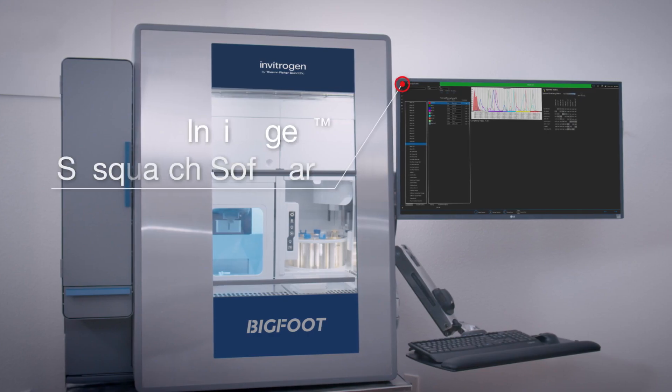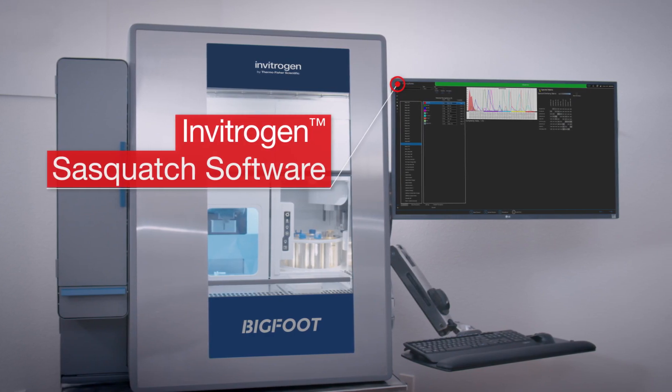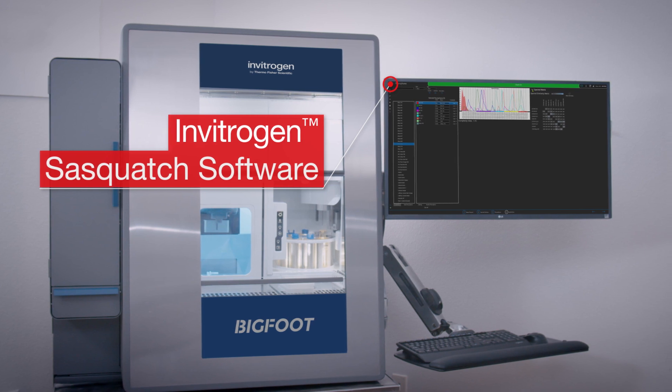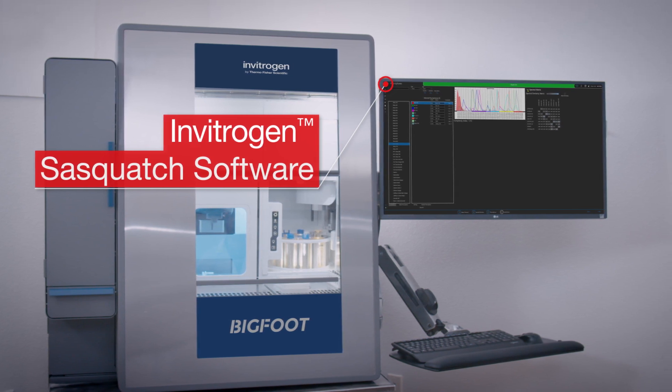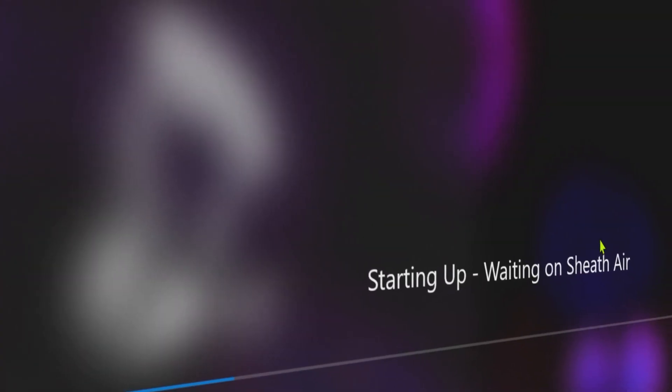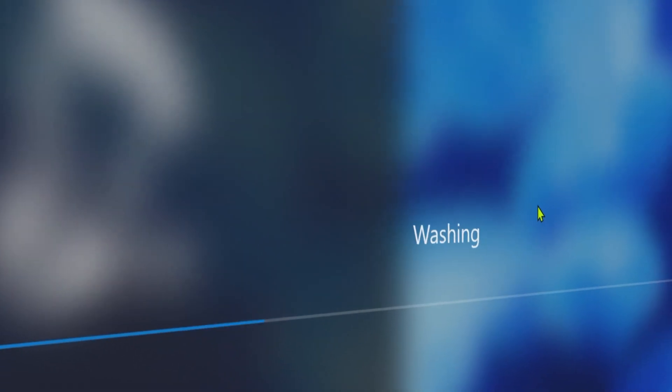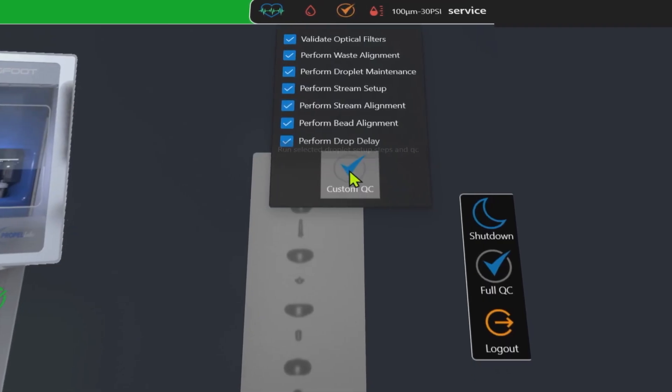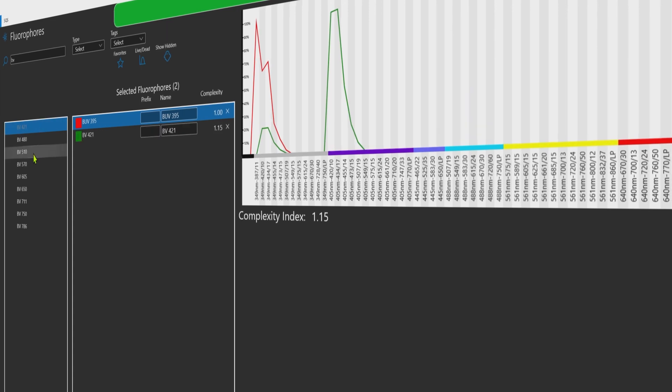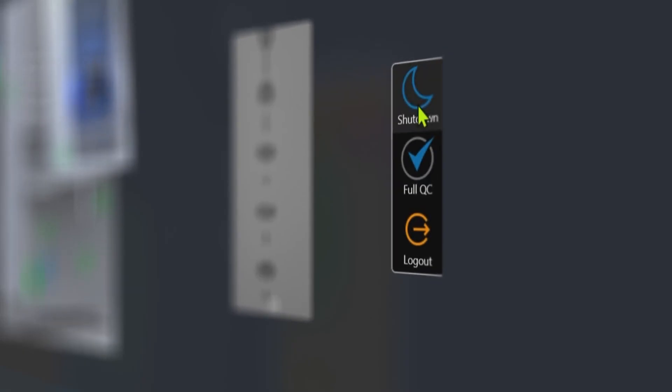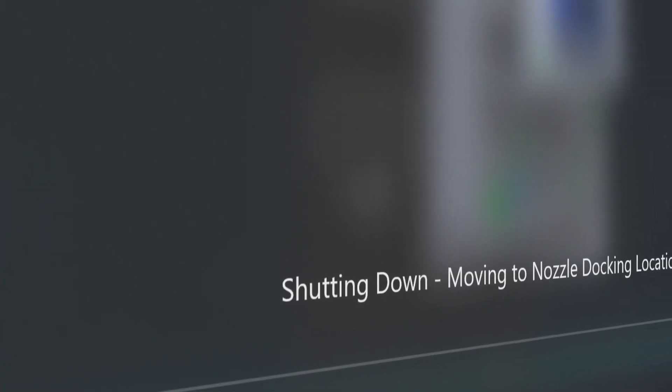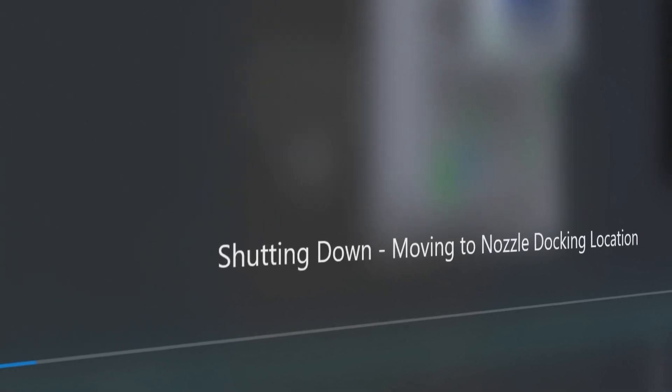Advanced automation and intuitive software allow operators with all levels of knowledge to use and control the system with confidence. The software provides quick start-up, auto-calibration, and accurate quality control, combined with an experiment designer and one-button shutdown, allowing the system to be easy to use while reducing downtime.